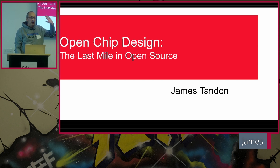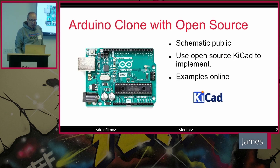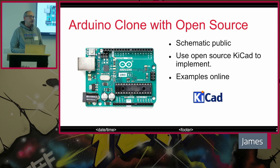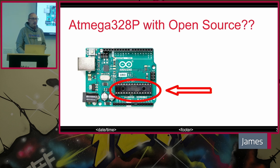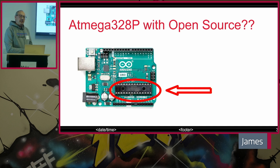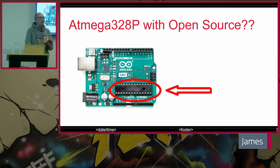If you've worked with Arduino or Raspberry Pi, you've also worked with open hardware. Arduino clones are actually available now for open source PCBs and schematics. You can use KiCad, which is an open source software program for doing PCB layout, and many examples are online so you can download that. But what about this device right here — the ATmega 328P? This device takes quite a bit more. It's more like a black box to a lot of people. Most people don't even look inside of it.